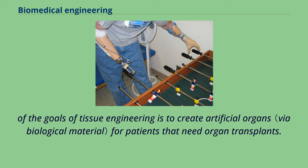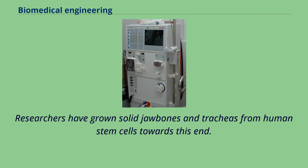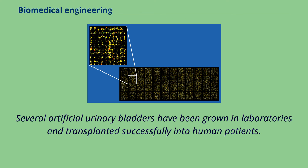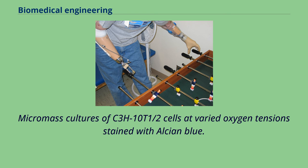One of the goals of tissue engineering is to create artificial organs for patients that need organ transplants. Biomedical engineers are currently researching methods of creating such organs. Researchers have grown solid jawbones and tracheas from human stem cells towards this end. Several artificial urinary bladders have been grown in laboratories and transplanted successfully into human patients. Bioartificial organs, which use both synthetic and biological components, are also a focus area in research, such as hepatic assist devices that use liver cells within an artificial bioreactor construct.